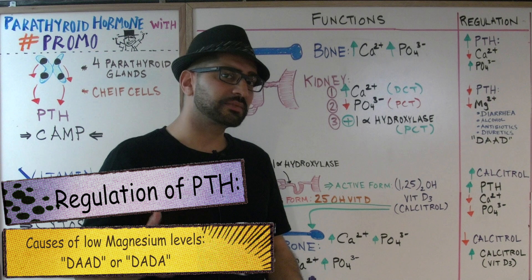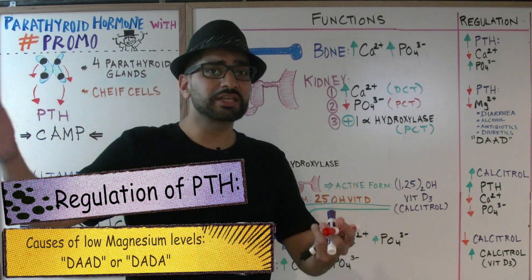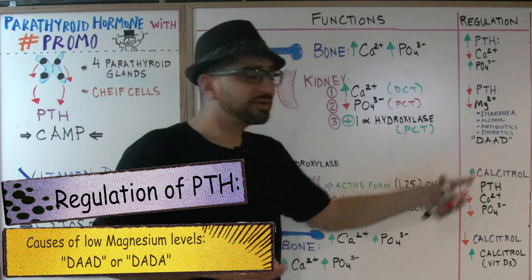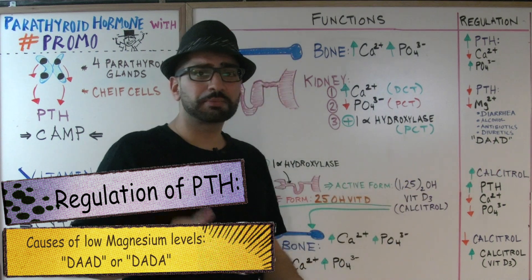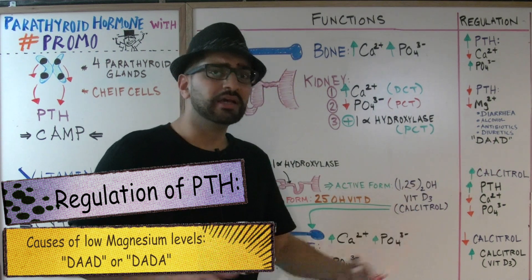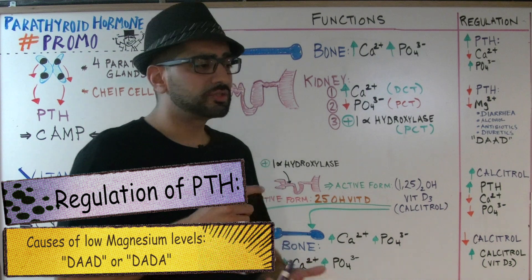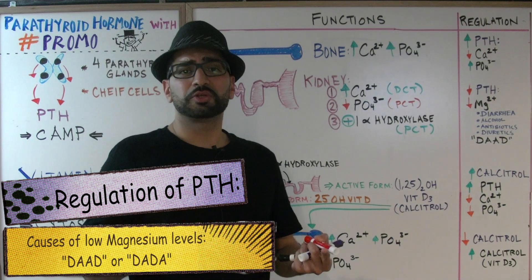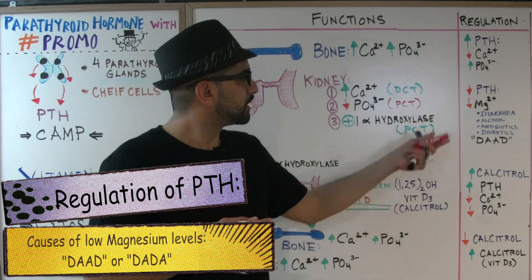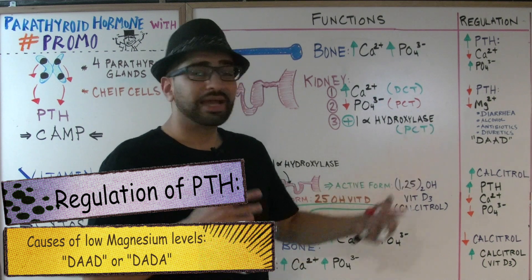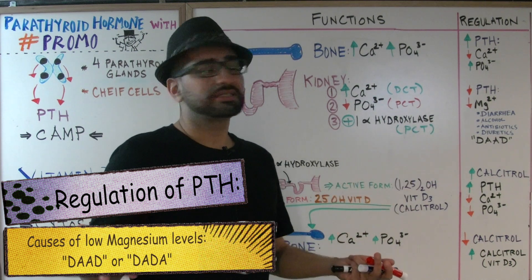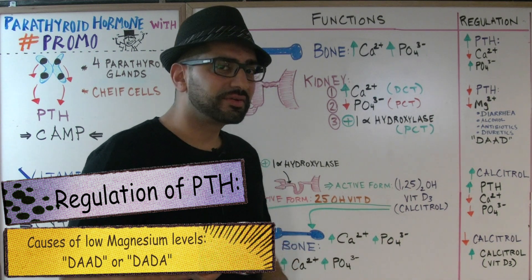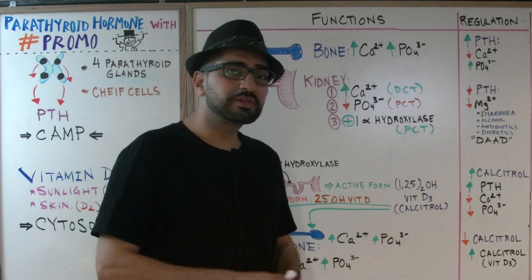What causes low magnesium levels? There's diarrhea, alcohol, diuretics, and antibiotics. To remember this, use the mnemonic DAD — or rearrange to DATA. Think about dads who drink alcohol; alcohol is a diuretic so they'll be urinating a lot. Most dads don't like to take antibiotics, and all that alcohol can cause diarrhea.